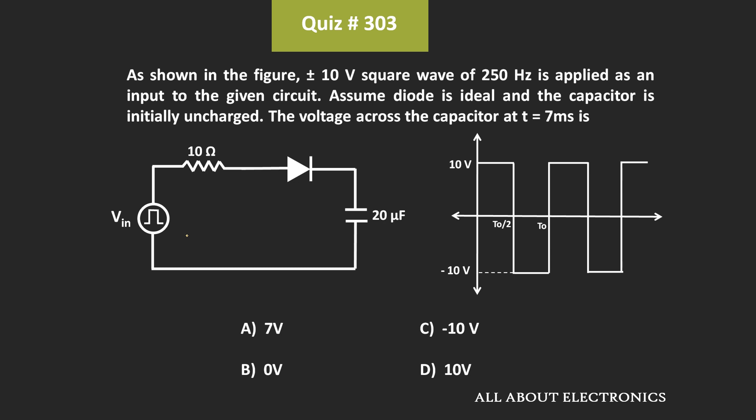The frequency of this square wave is 250 Hz. And for the given circuit, we have been asked to find the voltage across this capacitor at t equals 7 ms.